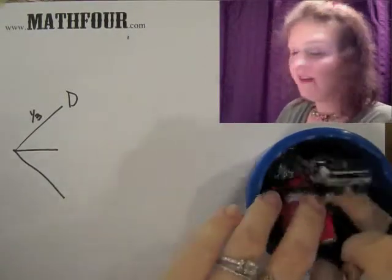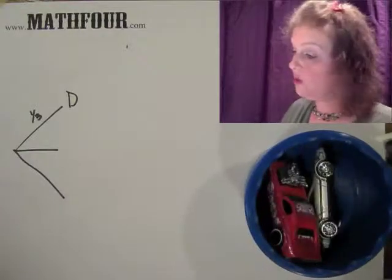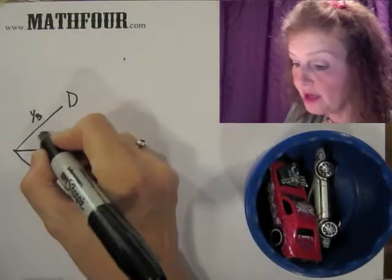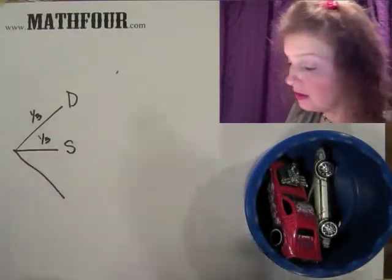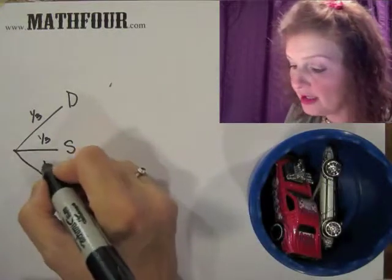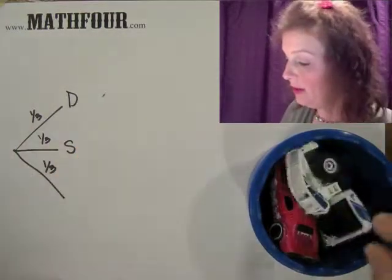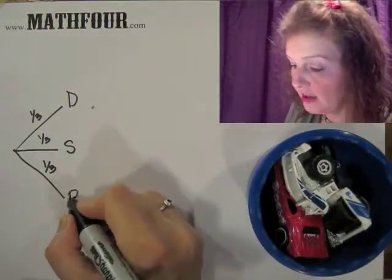Now, if all things are equal, I have a one in three chance of it being the steamroller and a one in three chance, I put them all back, by the way, before I draw, of it being the pink car.